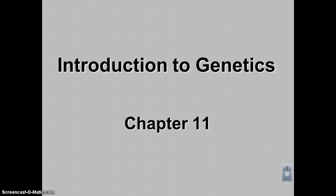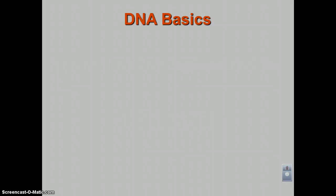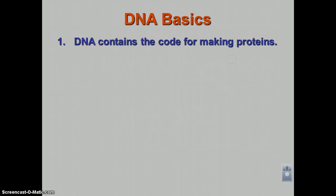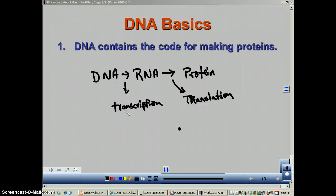Our first podcast actually covers something that we've already gone over before in chapters 12 and 13 — what is a gene. First of all, let's just review the basics of DNA. Remember that DNA contains the code for making proteins. And if you can remember the central dogma: DNA to RNA and RNA to protein. Going from DNA to RNA is transcription, and from RNA to protein is translation.